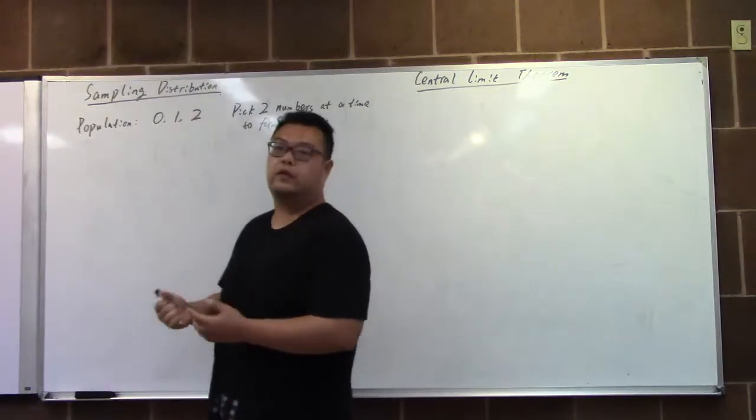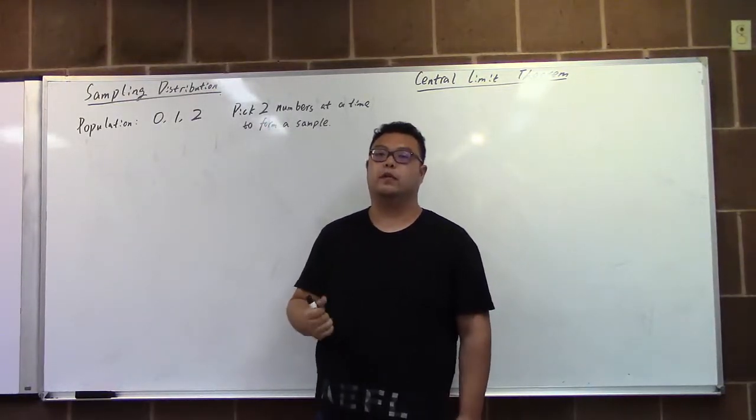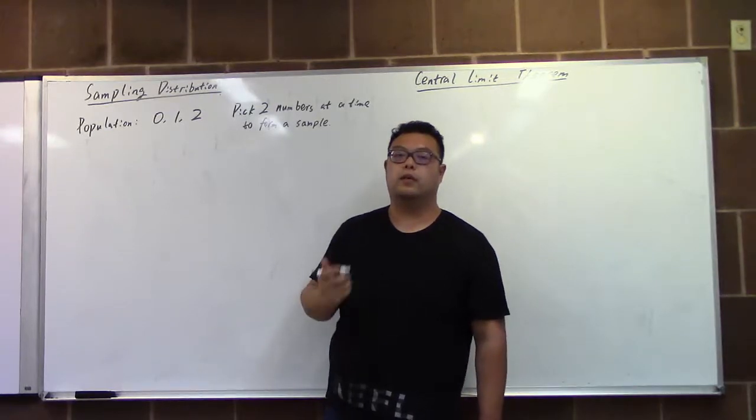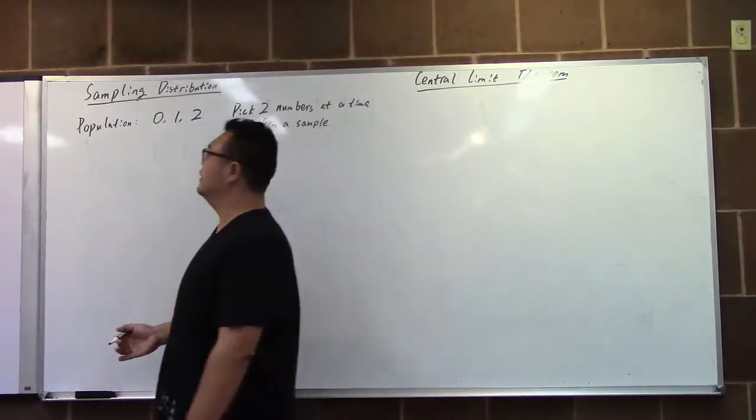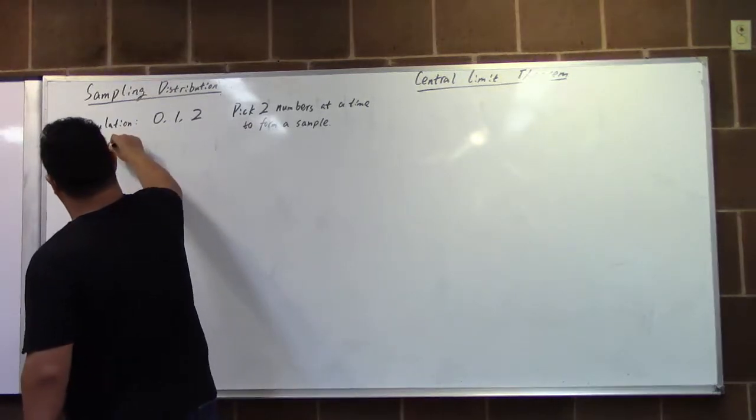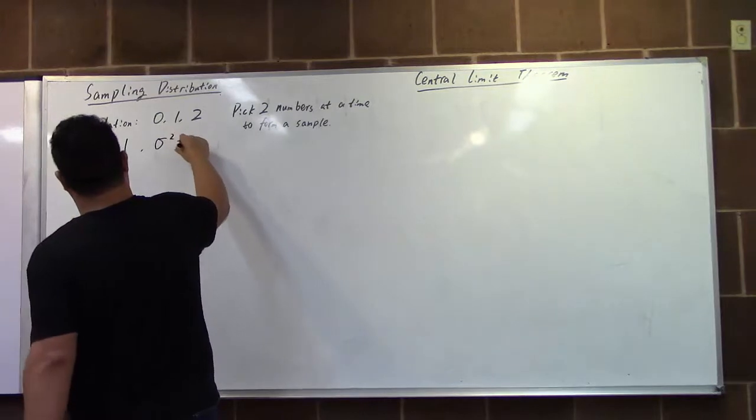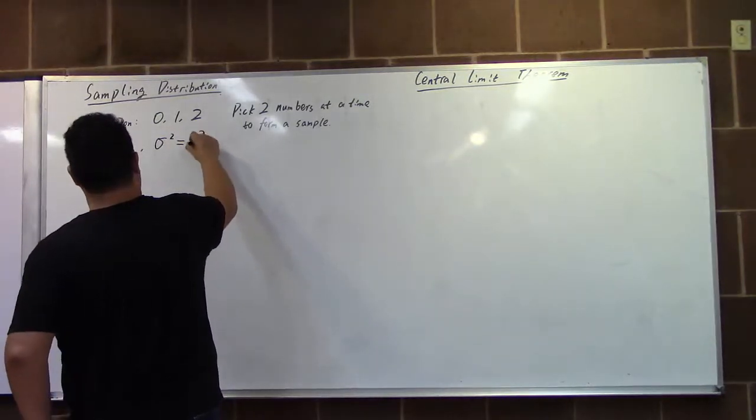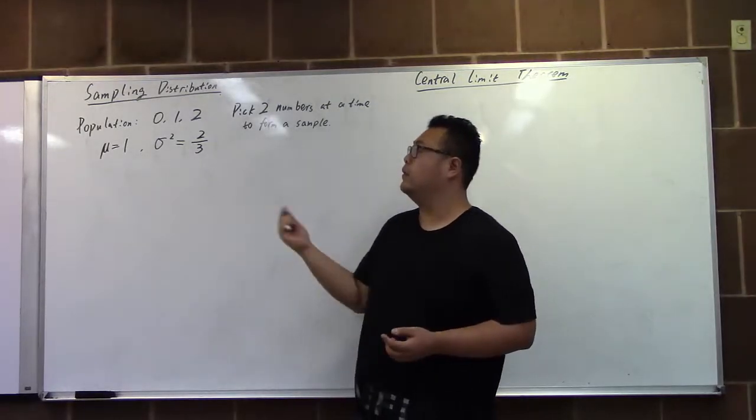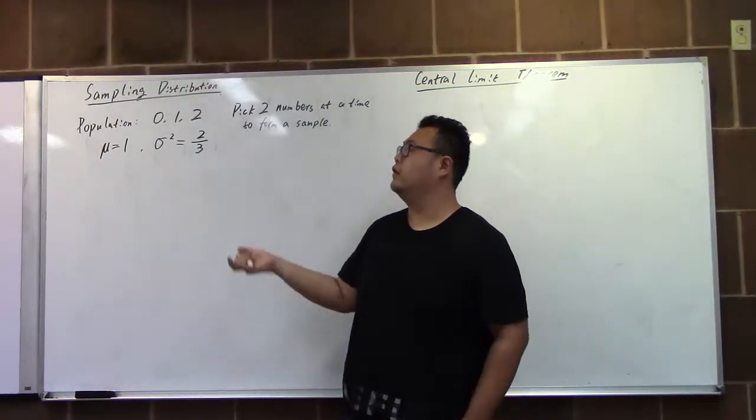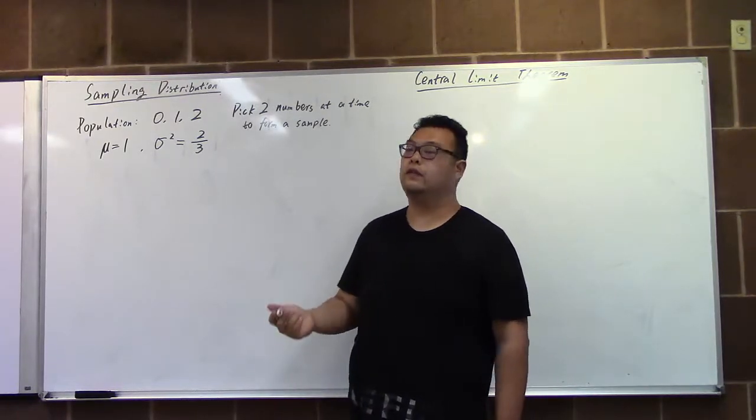Before we're doing that, the population we're able to calculate is the population mean and the population variance. Everyone knows how to calculate it. From that population we have population mean is 1, and the population variance is 2 over 3.